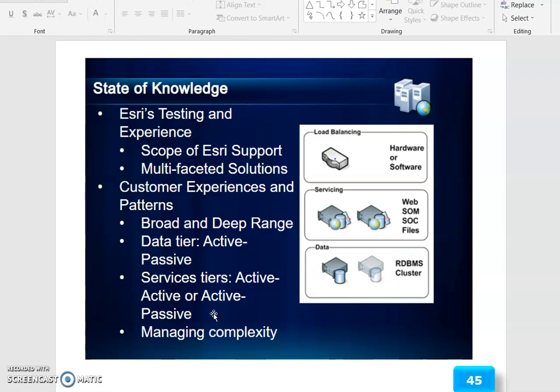The state of knowledge covers ESRI testing and experience, scope of ESRI support, multi-phased solutions, customer experience and patterns, broad and deep range, data tier, active-passive service tiers, active-active or active-to-passive configurations, and managing complexity. Hardware or software services through web, SOM, SOC files, data in RDBMS, and clustering are involved.